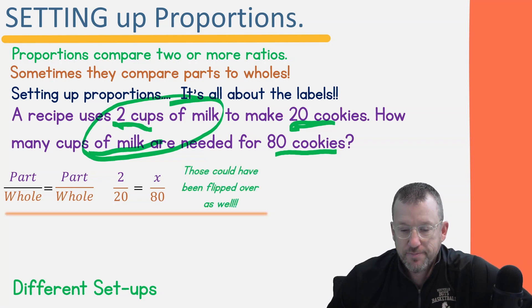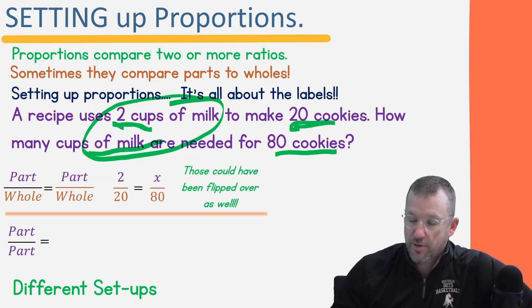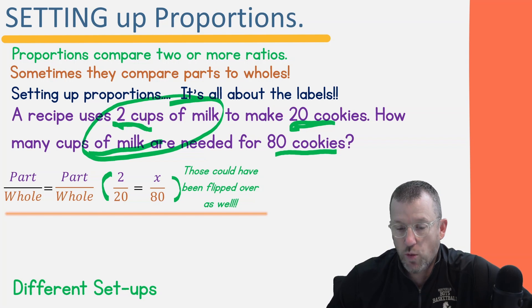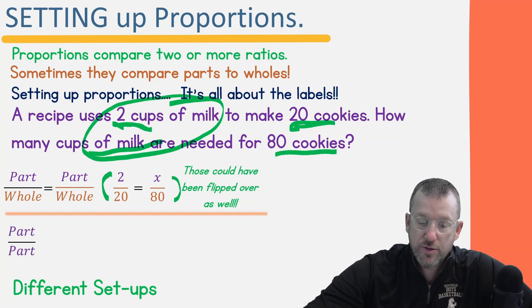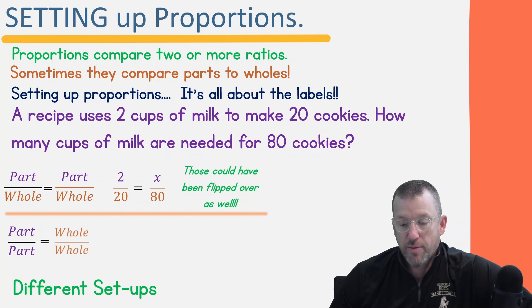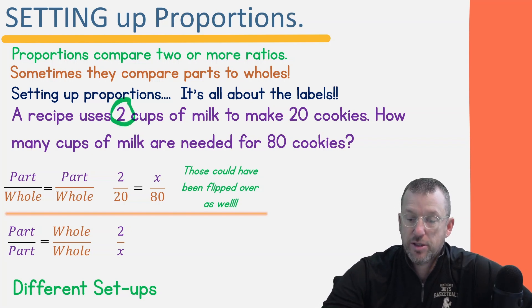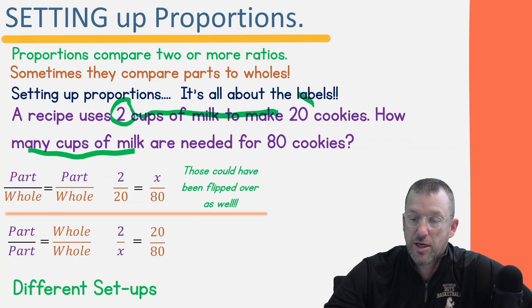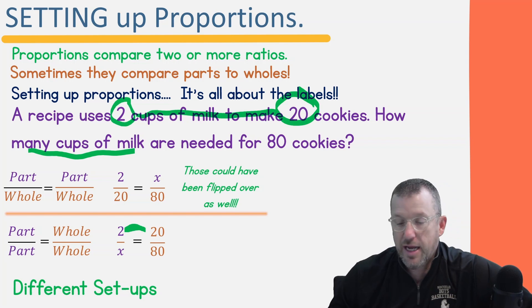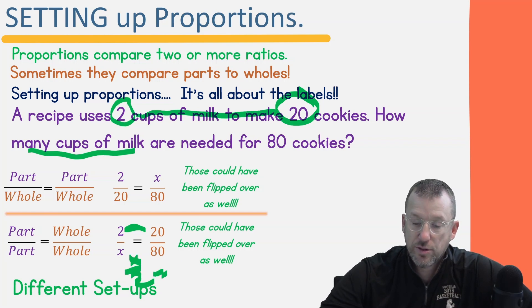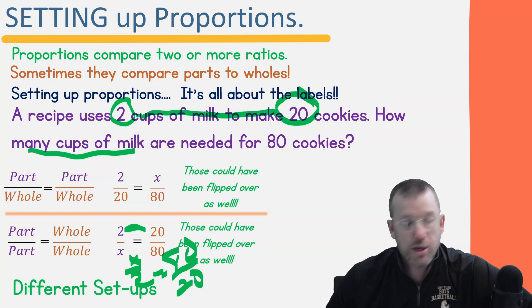These could also be flipped — it could be 20 over two equals 80 over X. Another way is part over part equals whole over whole. So two over X equals 20 over 80, keeping the ratios lined up together. The reason 20 is with the two is because they go together in the first scenario, and 80 goes with X in the second. It could also be X over two equals 80 over 20 — it doesn't matter as long as the labels are all put together.